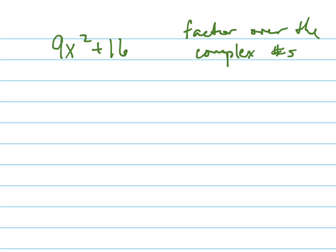So we're factoring 9x squared plus 16 over the complex numbers. Now this is a little bit different. You can do this in a different way. You don't have to complete the square and you don't have to use the quadratic formula. Although you could, you don't have to. And the reason you don't have to is because there's this little trick you can do.